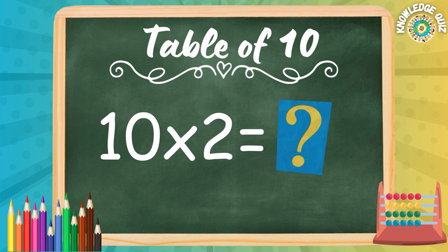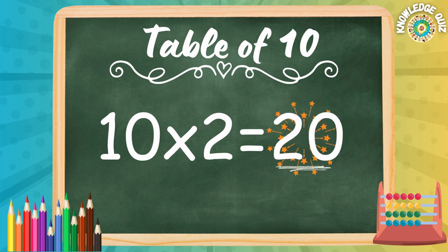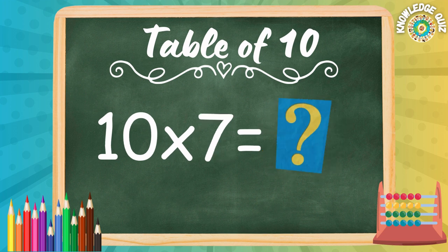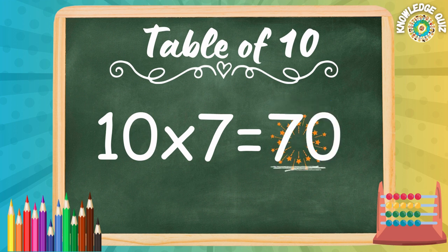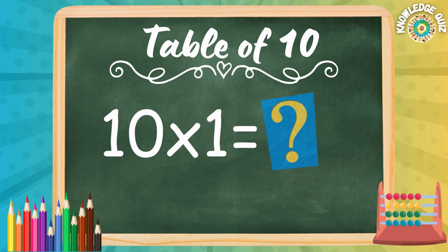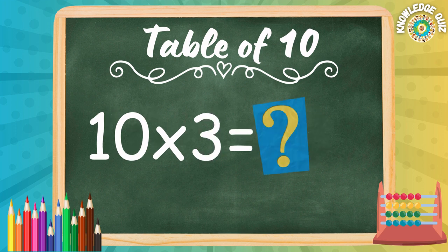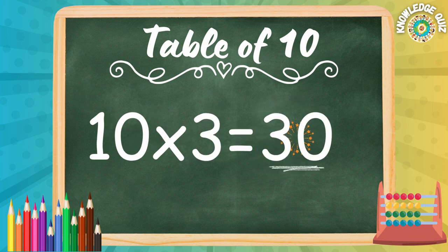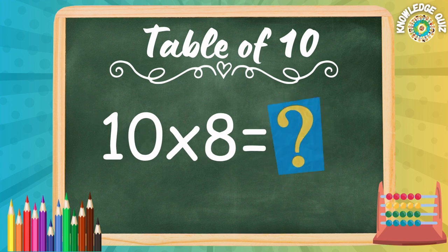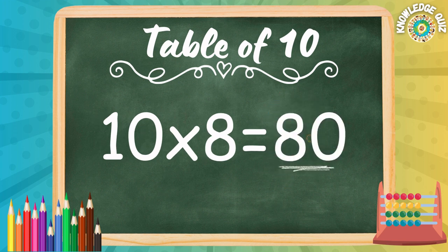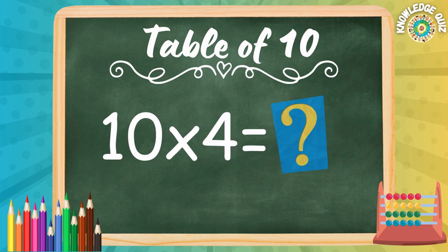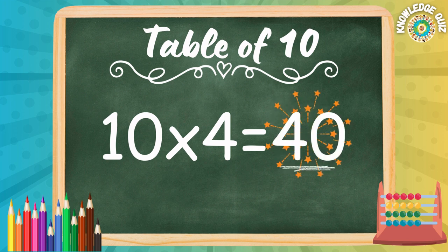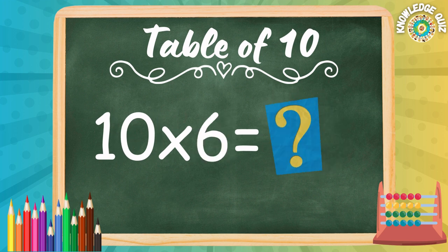10 twos are... 20. 10 sevens are... 70. 10 ones are... 10. 10 threes are... 30. 10 eights are... 80. 10 fours are... 40. 10 sixes are... 60.